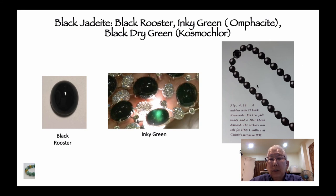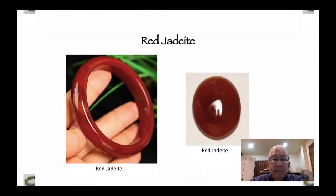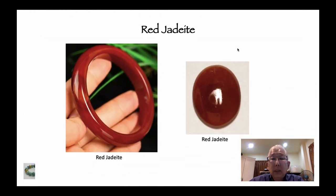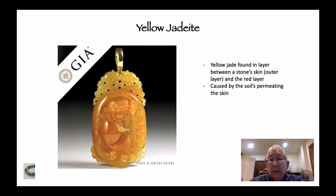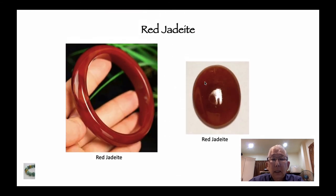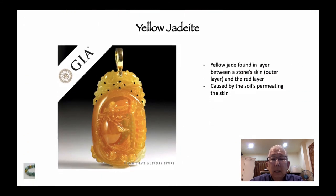Barbara just bought a whole bunch of them and you'll be seeing them soon. This is red jadeite — it's beautiful. Then you have yellow jadeite. Just as I noted, yellow jadeite is caused by the soil permeating the skin, just like with red — the hematite permeating the skin and influencing the color of the jadeite.